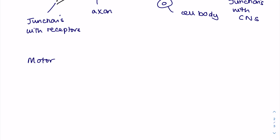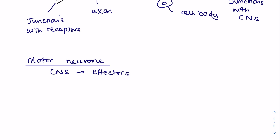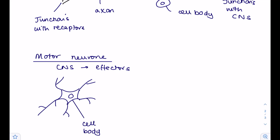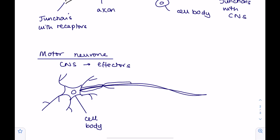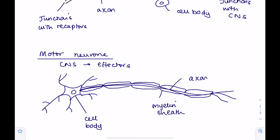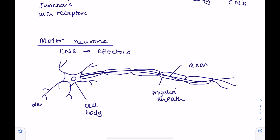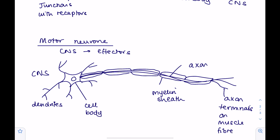Now we'll look at the motor neuron, which remember makes connections between the central nervous system and the effectors, so in a nervous response we're looking at the end response. Motor neurons have this characteristic star shape where you find the cell body, then you have your long axon again as well as that all-important myelin sheath. These cytoplasmic processes are known as dendrites and they make connections with the central nervous system. Down here you have axon terminals which make connections with the effector. Remember a muscle is an example of an effector, and in this case the nerve impulse will be passing in this direction.